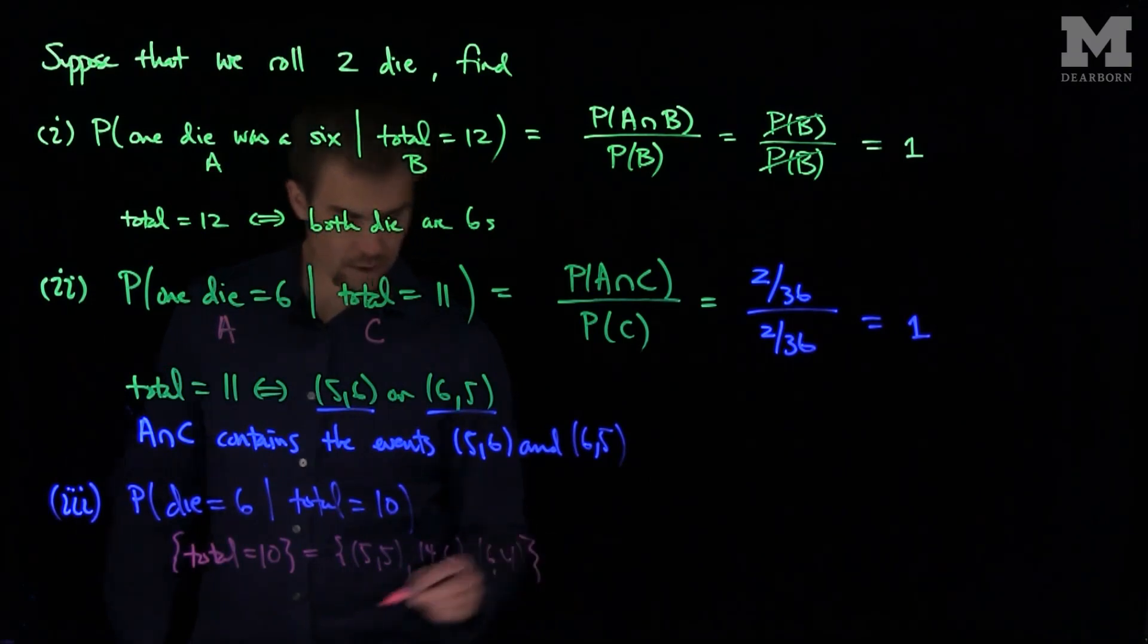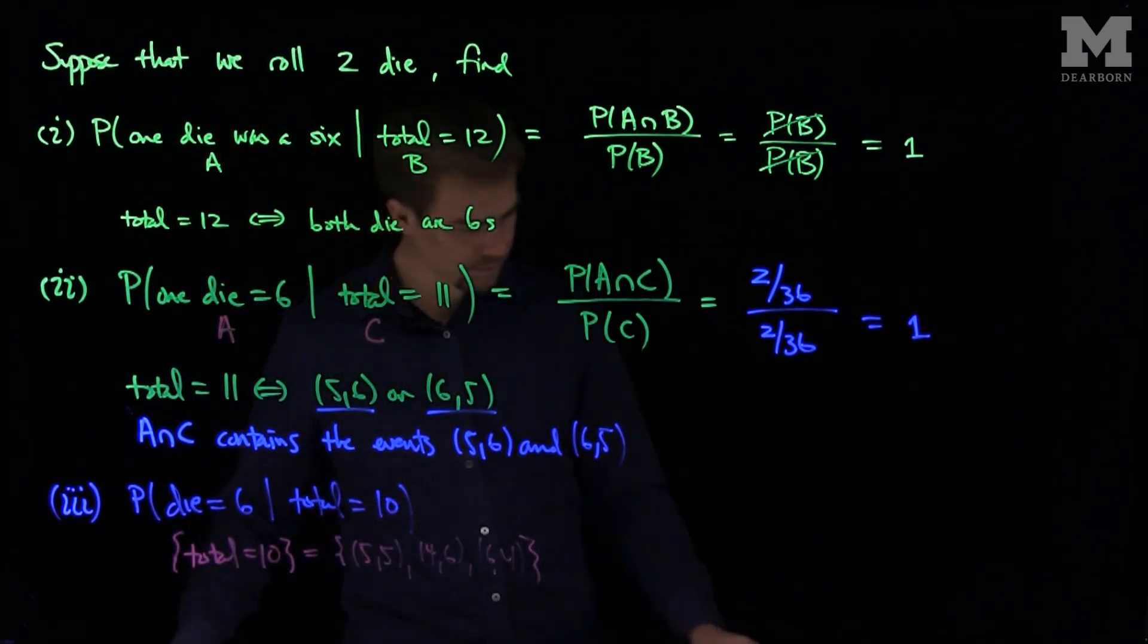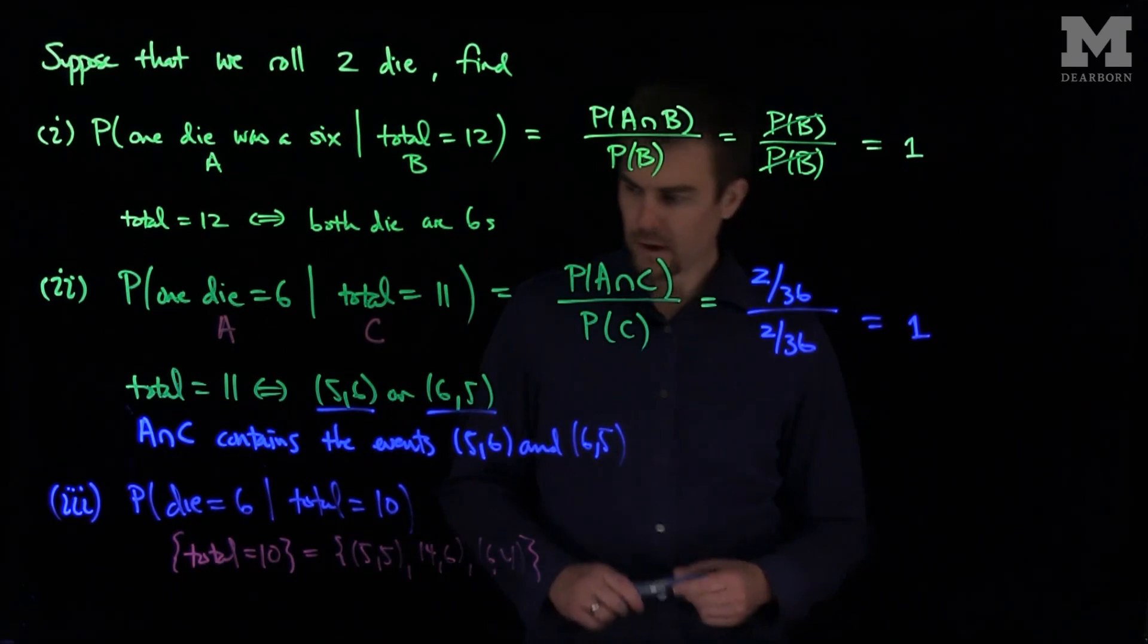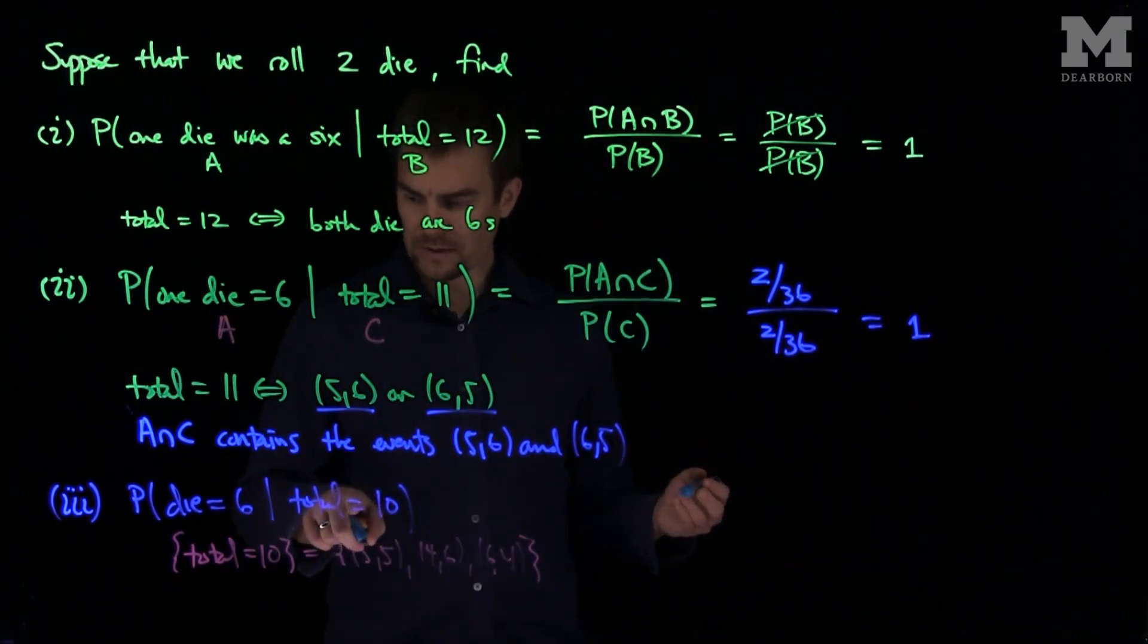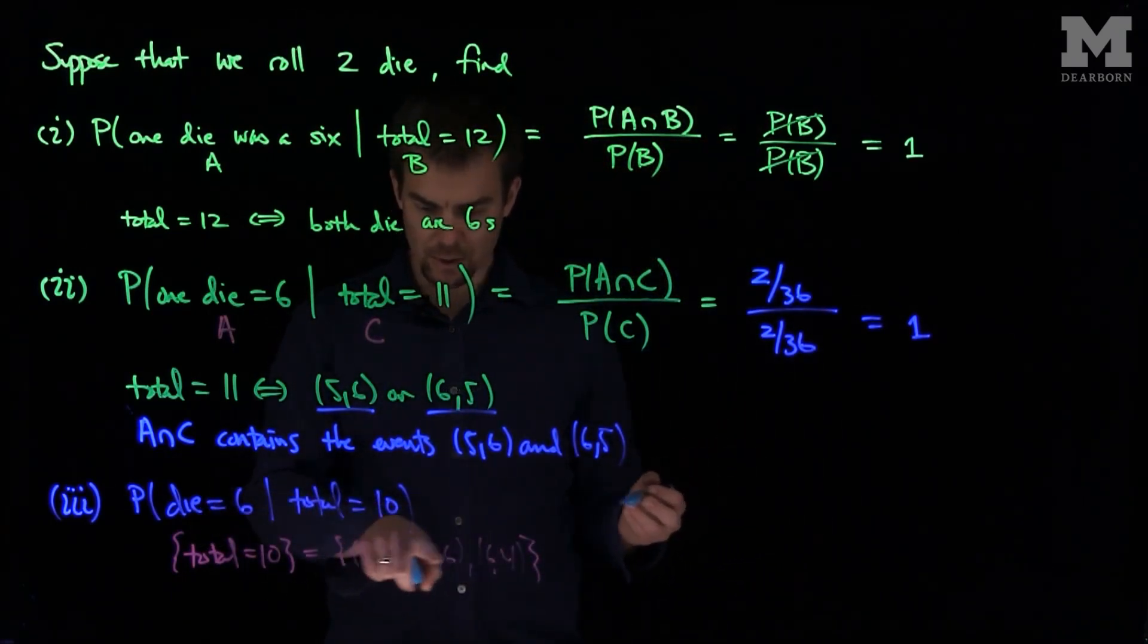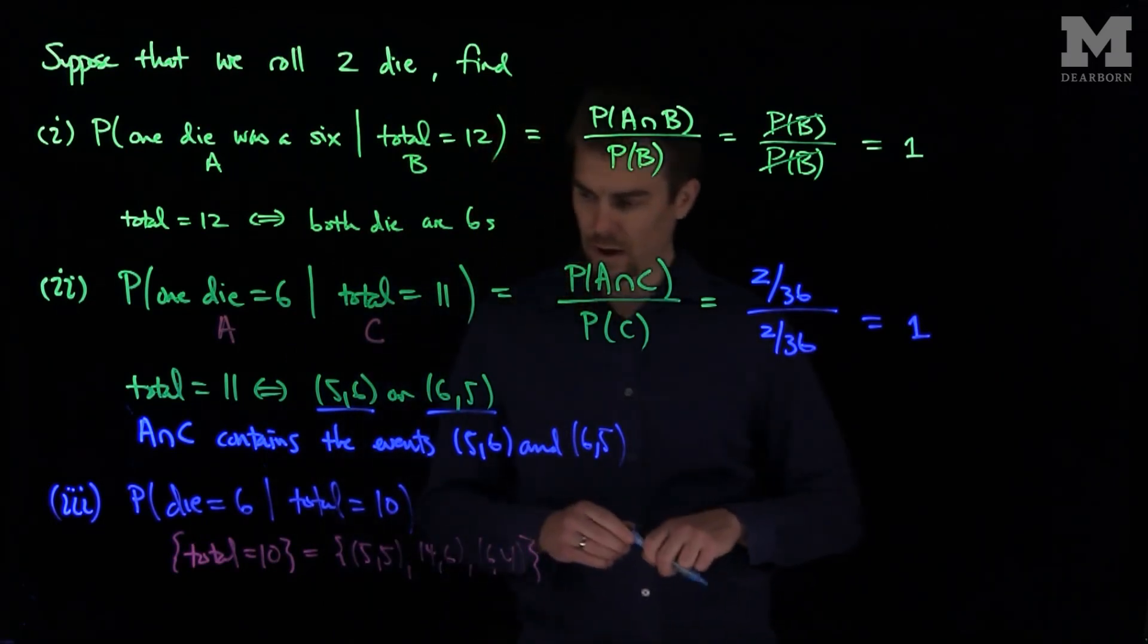So there's a total of 3 events, where the total is 10. So the probability of a total of 10 and one of the dice is 6 is a total of 2 out of a total of 36.